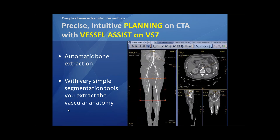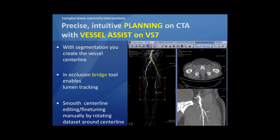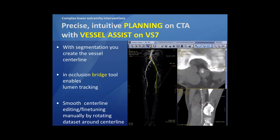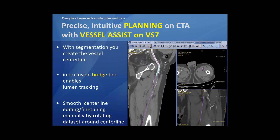Afterwards, when you have this vascular anatomy, you can in an easy way create the vessel central line using the segmentation. I start with a little dot in the aorta and then afterwards I go with a little dot to the groin, and you see that the green line is really central-lining the iliac axis. Then, in occlusions — long occlusions such as an SFA occlusion — we can bridge the occlusion of the SFA from the beginning point in the groin up to the reentry zone at the popliteal side. This enables lumen tracking.